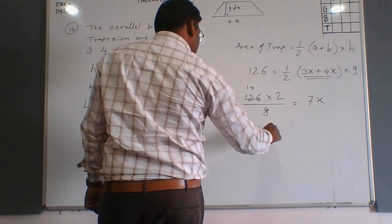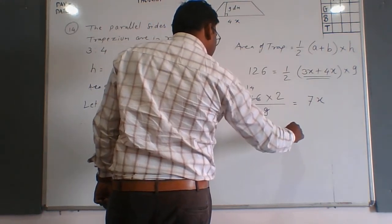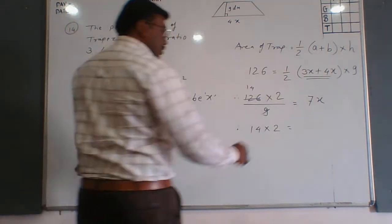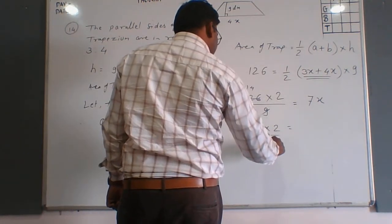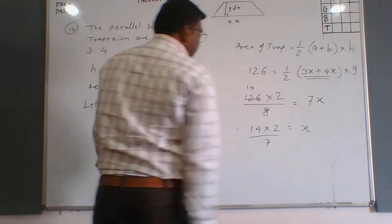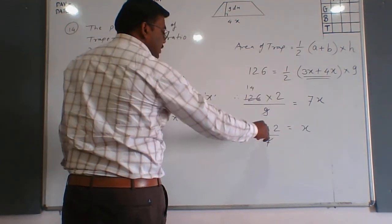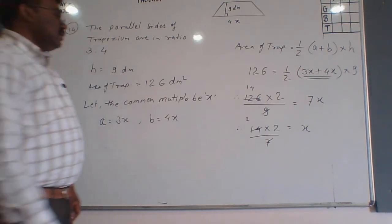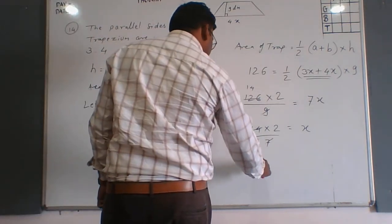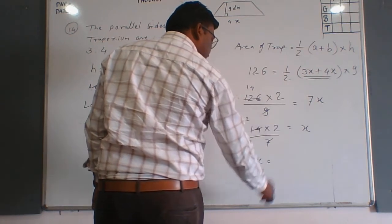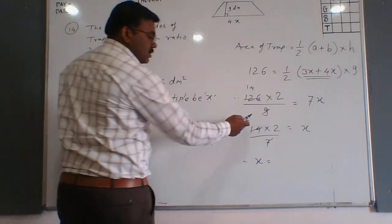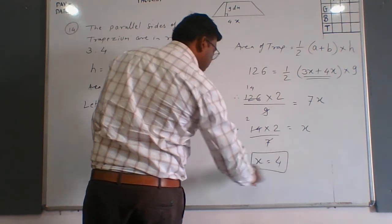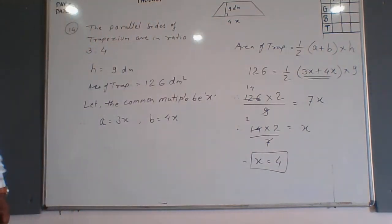After cancellation: 14 nines are 126, so it becomes 14 multiplied by 2. The 7 is in the multiplication, shifting that side makes it division. So the value of x is 2 multiplied by 2, which equals 4 units.